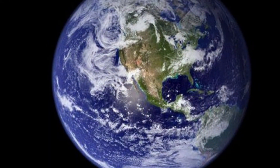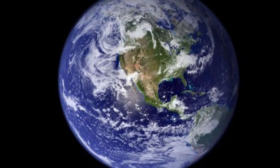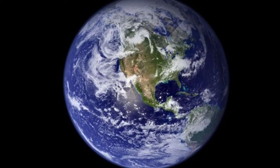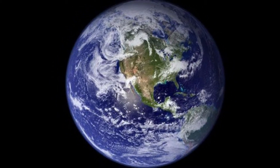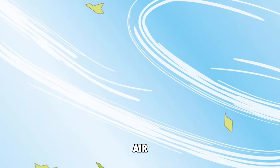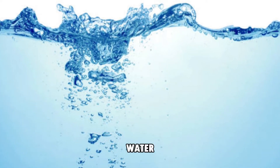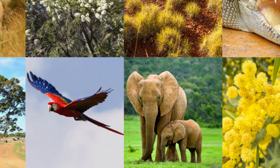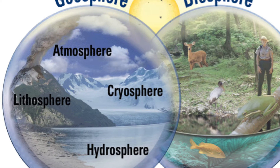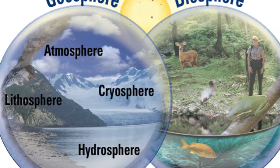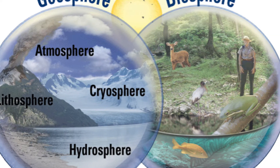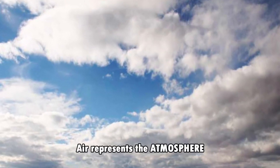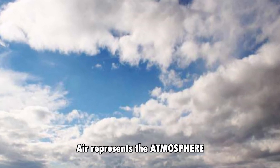The earth is comprised of four major subsystems. These are the air, water, land, and life. These subsystems are also called the spheres of the earth. Air represents the atmosphere.